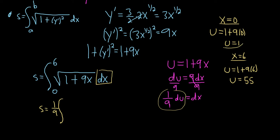And we have the definite integral. 0 gets replaced with 1, so our lower limit becomes 1, and 6 gets replaced with 55, so our upper limit becomes 55. And we're left with the square root of u du.